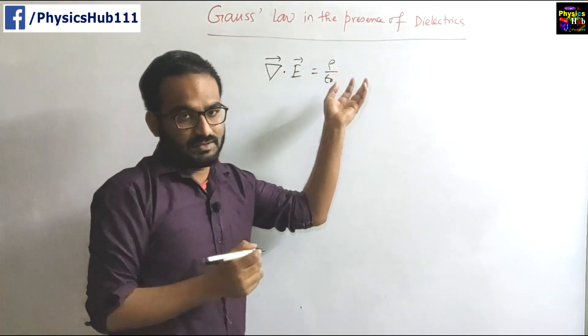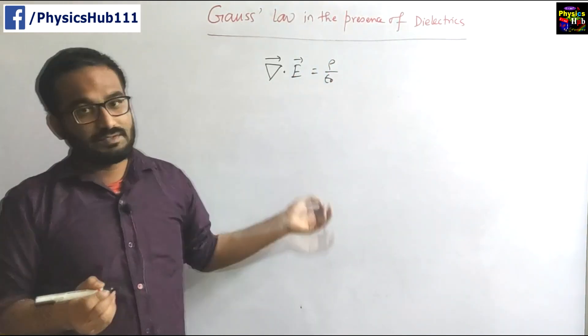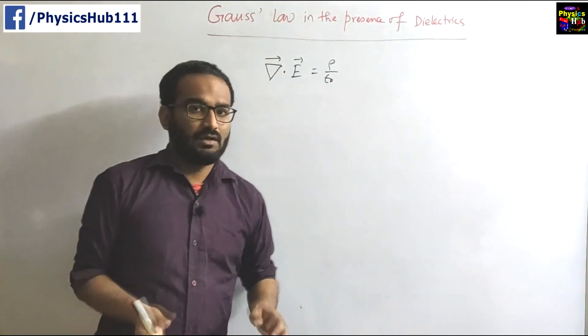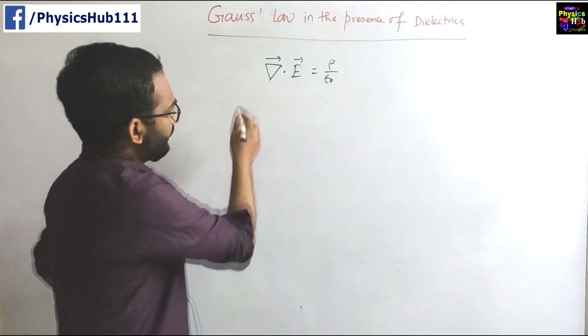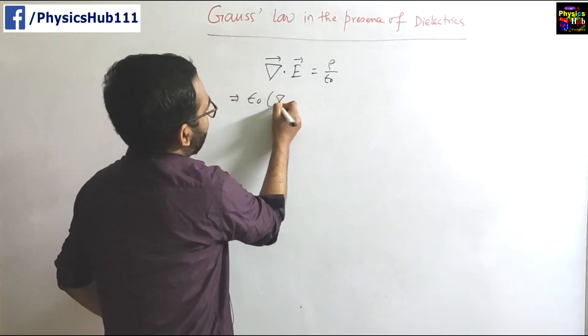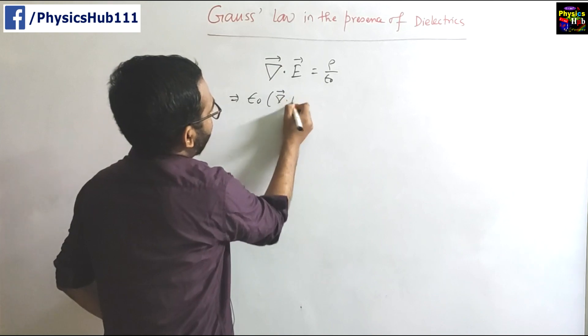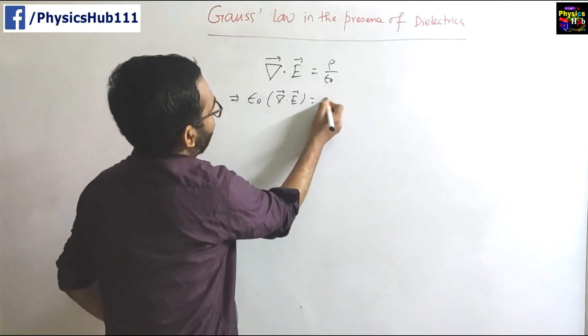Here E is the electric field, rho is the charge density, and epsilon naught is the permittivity of free space. From here we can write epsilon naught times divergence of E equals rho.